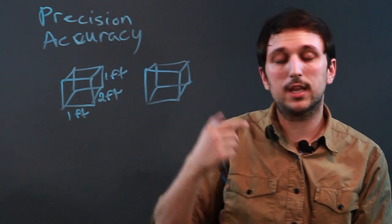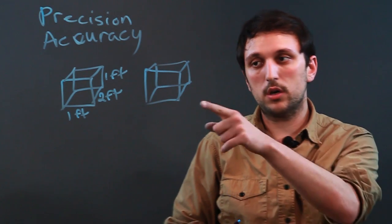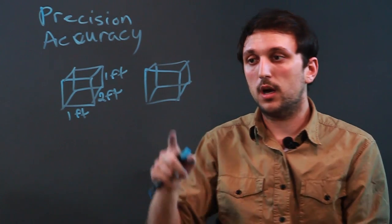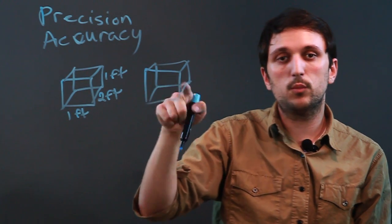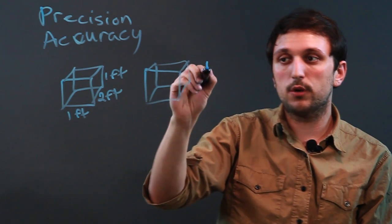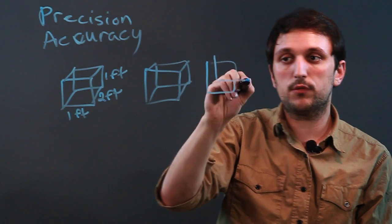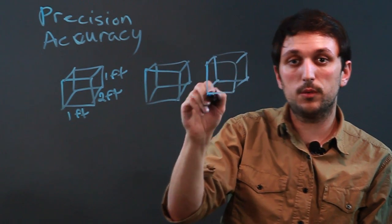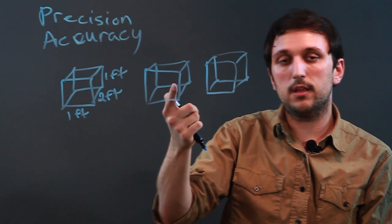Now precision is getting something that you've drawn—like now I've drawn this as a replica of this real box. Precision would be replicating this box again after I've drawn this one. So if I can make this one as close as possible to the previous one I've drawn, that is precision.